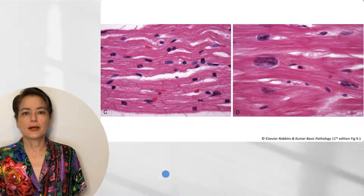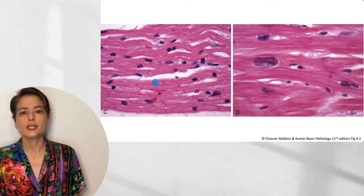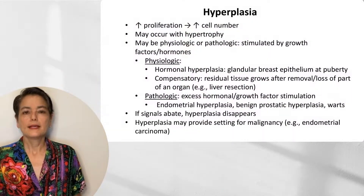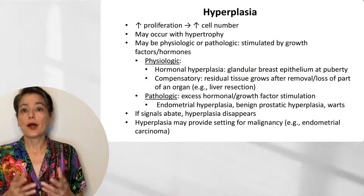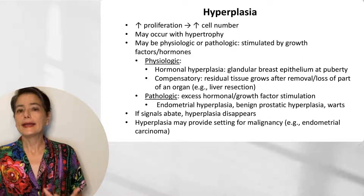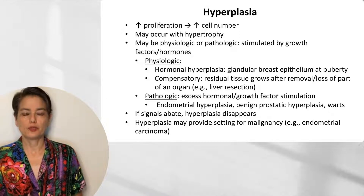Let's look at some microscopic images taken at the same magnification. Here we have our normal cardiac myocytes, and by comparison, here we have hypertrophic cardiomyocytes. Now let's move to hyperplasia, which is due to increased cell number, and it can occur in the same tissue with hypertrophy.